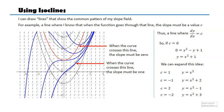Isoclines are lines that tell you that all solutions to the differential equation, when they cross that isocline, get that slope. Notice, very importantly, that some solution lines never cross the red isocline — hence those lines never have slope zero. That's okay and that's probably going to happen; you shouldn't be alarmed about it.